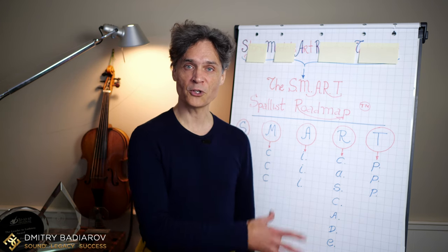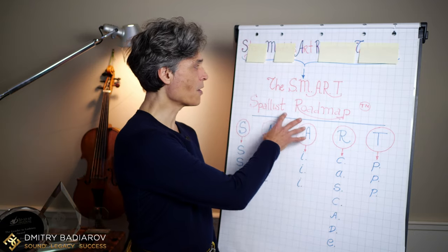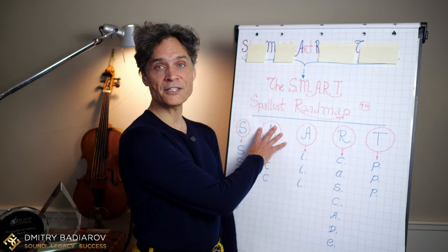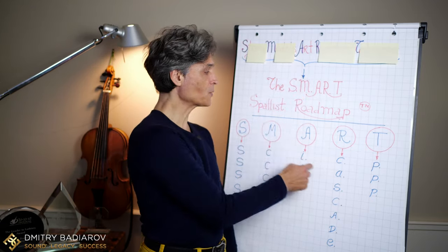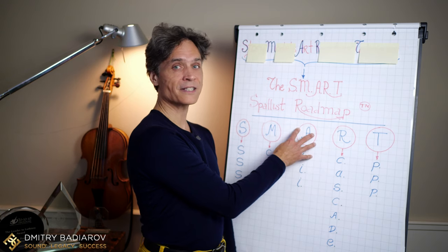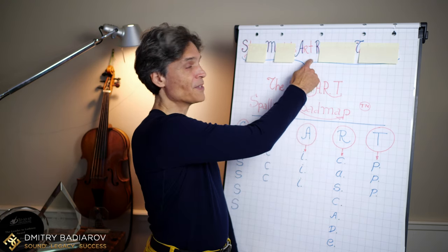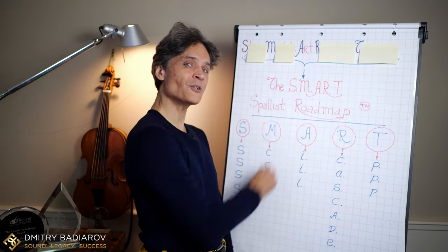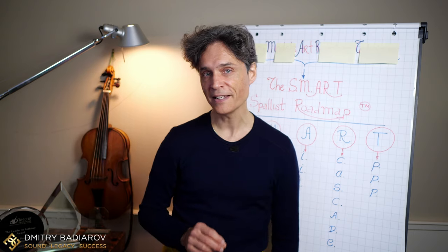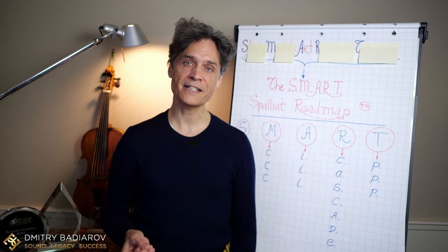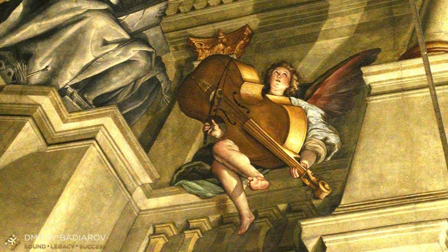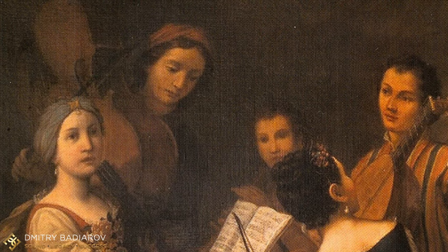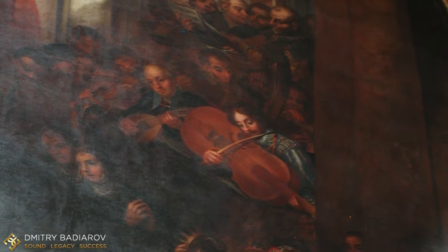I want to draw your attention to the Smart Spallist Roadmap, and today we are going to speak about one of the parts of this approach: the art. What do I mean by the art? By the art I mean the artistic representations of the violoncello da Spalla in the works of art by 17th and 18th century artists.